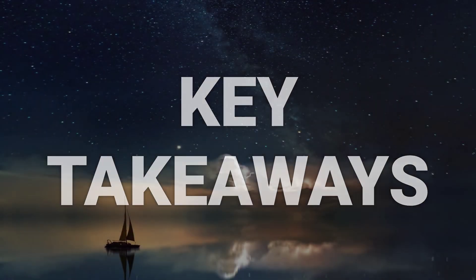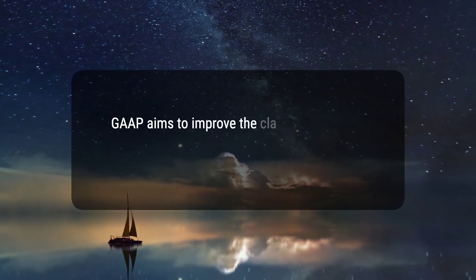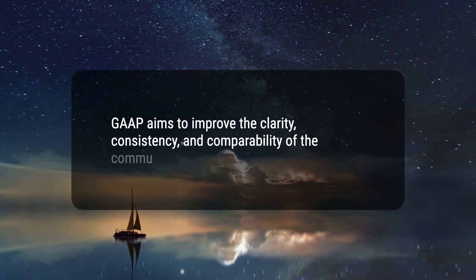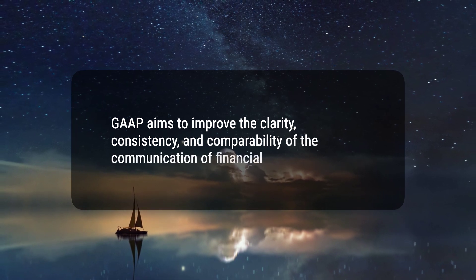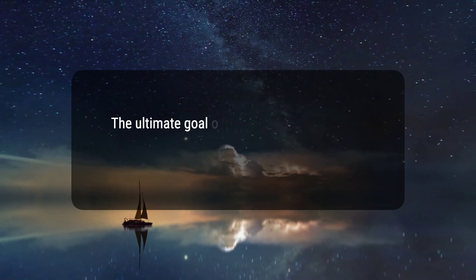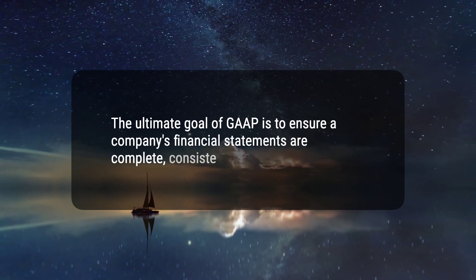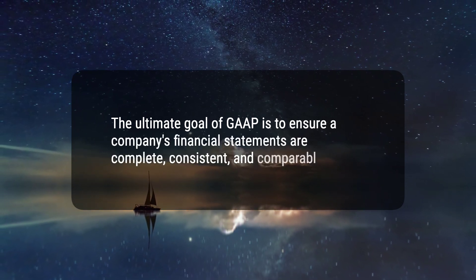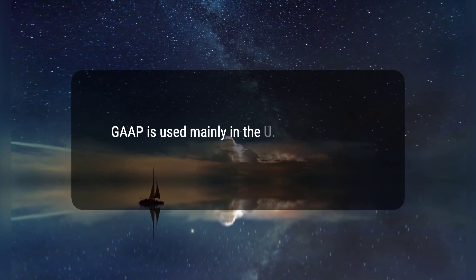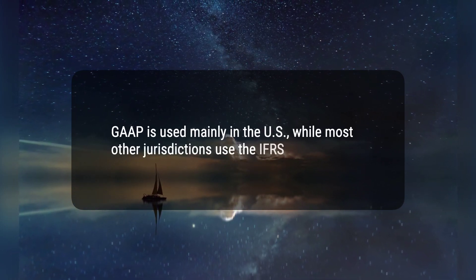Here are three key takeaways. One, GAAP aims to improve the clarity, consistency, and comparability of the communication of financial information. Two, the ultimate goal of GAAP is to ensure a company's financial statements are complete, consistent, and comparable. Three, GAAP is used mainly in the U.S., while most other jurisdictions use the IFRS standards.